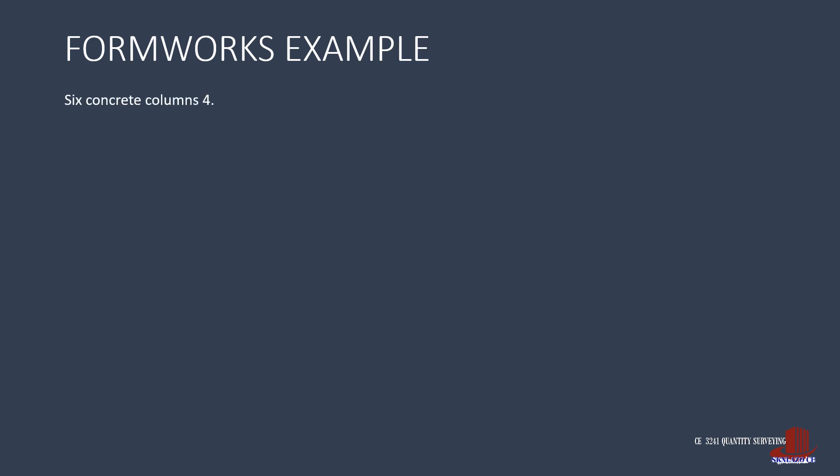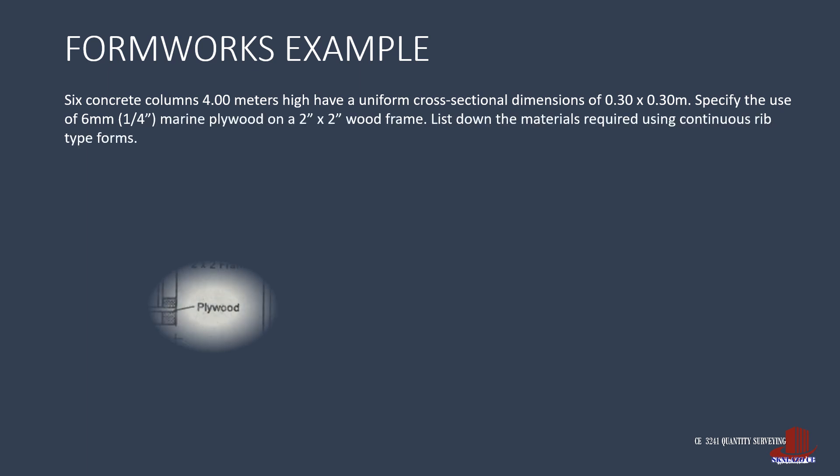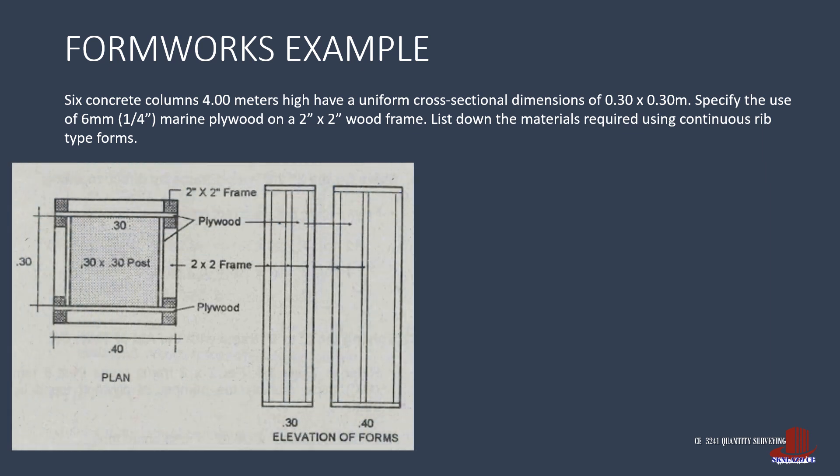Let's try this example to check the procedure. Six columns of 0.3 meters square with a height of 4 meters are to be estimated with a quarter inch plywood and 2 by 2 wood frame for the continuous rib type forms. First is to take the perimeter of each column using the equation, that is, twice of 0.3 plus another 0.3, then add 0.2 to have 1.4 meters.